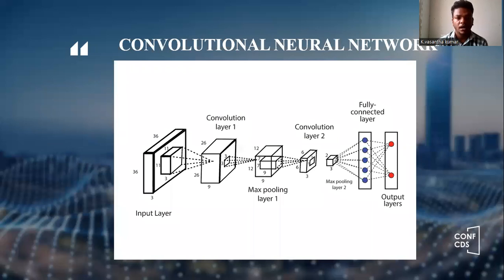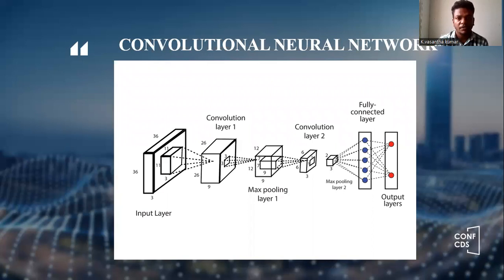This is the image of the architecture of a convolutional neural network. Here, one input layer and a convolutional layer in between, two max pooling layers, and finally a fully connected layer and output layer. These are the components of the architecture of a convolutional neural network.